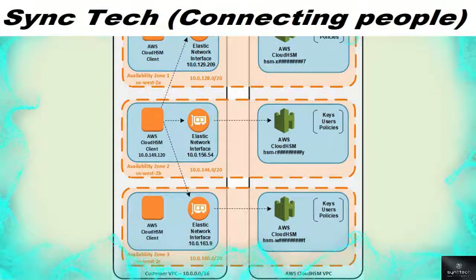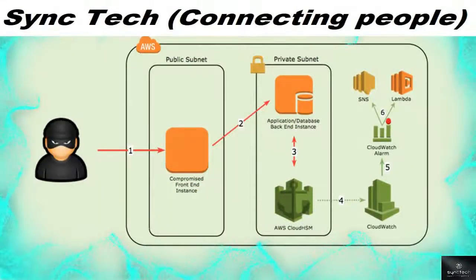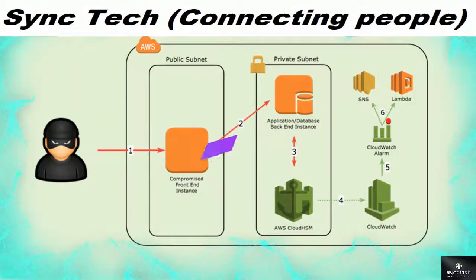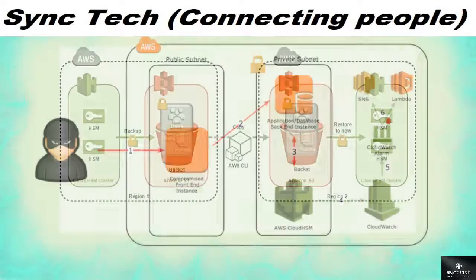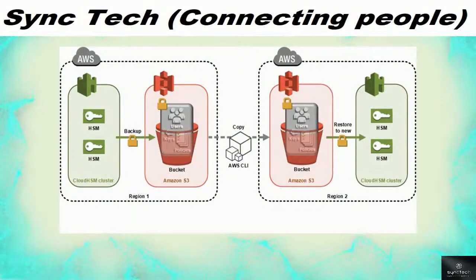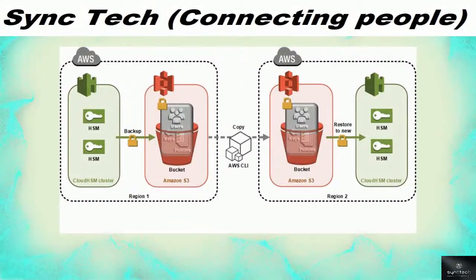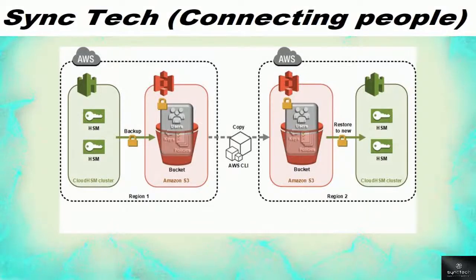You can integrate Cloud HSM with network instances or services using subnets and resource groups. It protects against malicious invaders — whether a compromised front-end instance or a database-level threat — using certificates and hardware-level security. For S3 buckets, you can add security by creating backups authenticated with HSM or restoring to new HSM instances. These operations can be performed both through the graphical interface and the AWS command-line interface.